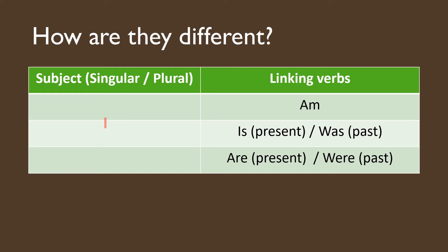'Am' is used exclusively for 'I.' For example, 'I am Malaysian,' 'I am thinking about you.' And then, 'is' and 'was' are only used for a singular subject or singular pronoun — we have he, she, it. For example: 'He is handsome,' 'She is beautiful,' 'It is cute,' when you're referring to an animal or something which is not human. But if the situation is in the past, you can use 'was.' For example, 'He was a fat boy,' 'She was ugly when she was seven years old,' 'It was cute' — maybe you're referring to a kitten, but when it became a big cat, maybe it's not that cute, so you can use 'was.'